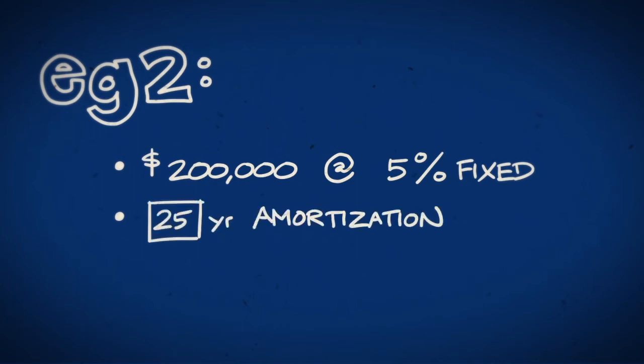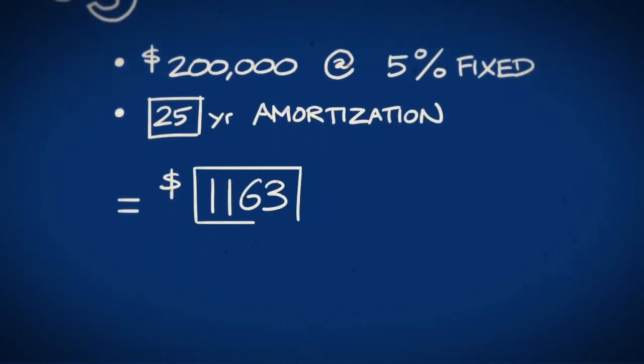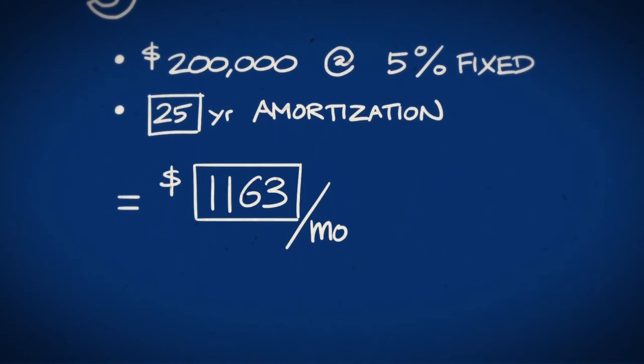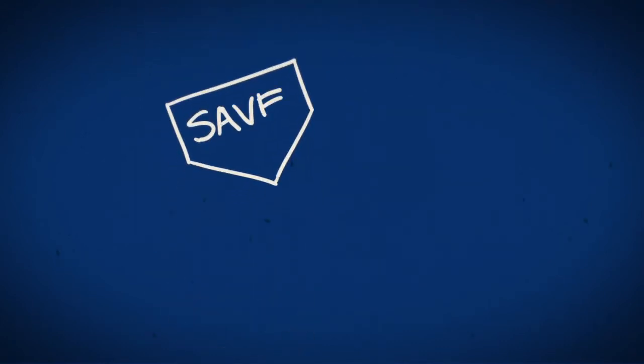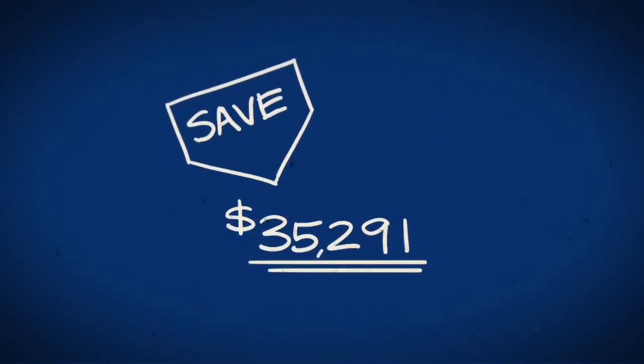If you shrink your amortization period to 25 years, your monthly payment is higher at $1,163, but your total interest expense will shrink to $148,962. You'll be saving $35,291.